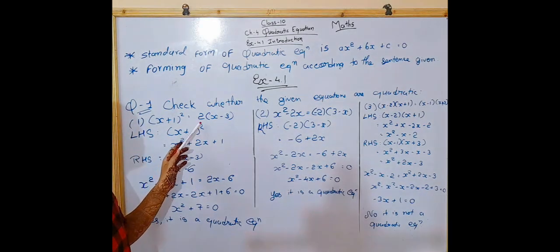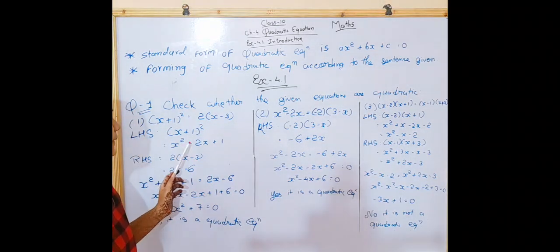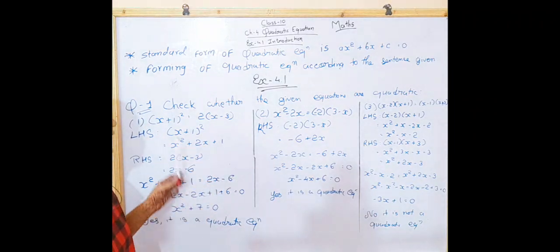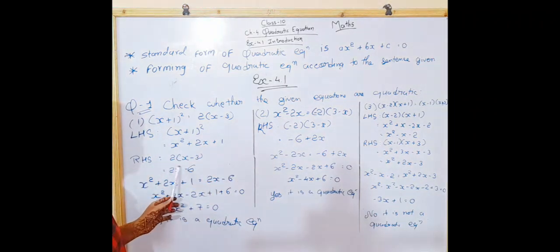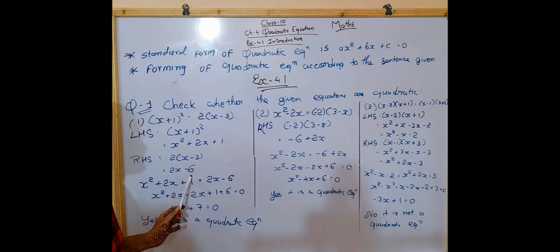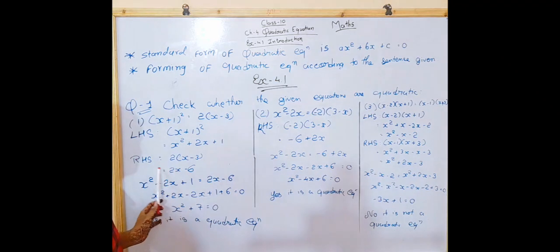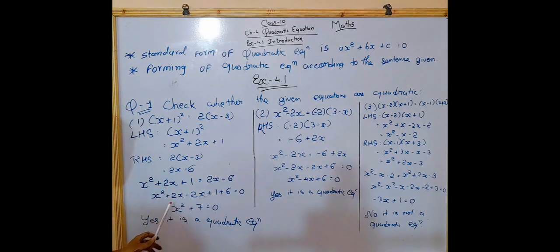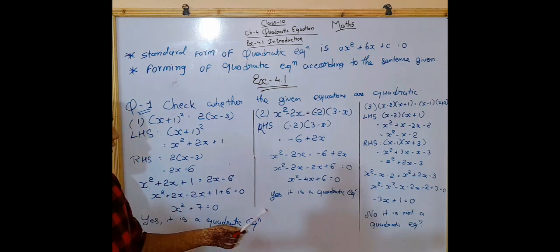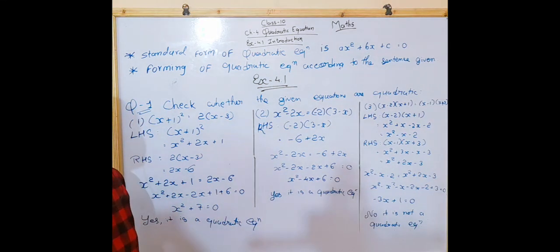The left-hand side, (X + 1)² = X² + 2X + 1. The right-hand side, 2(X - 3) = 2X - 6. By equating both sides, we get X² - 2X + 7 = 0, and it is a quadratic equation in standard form.